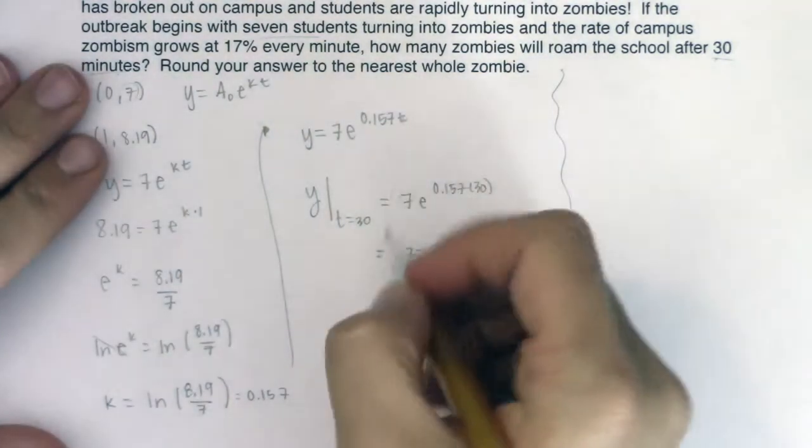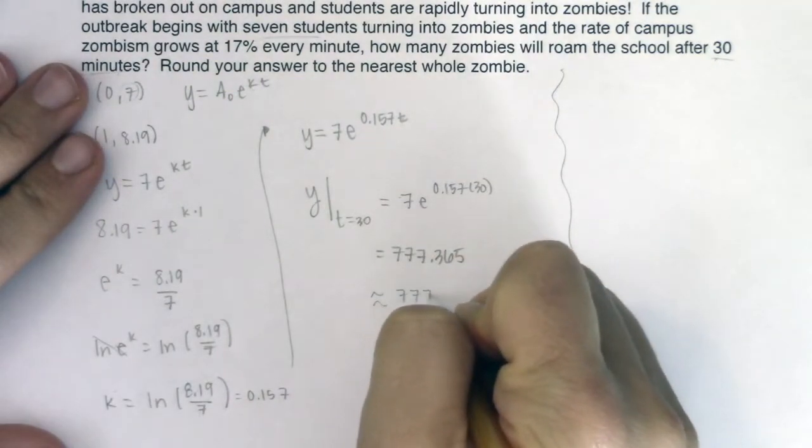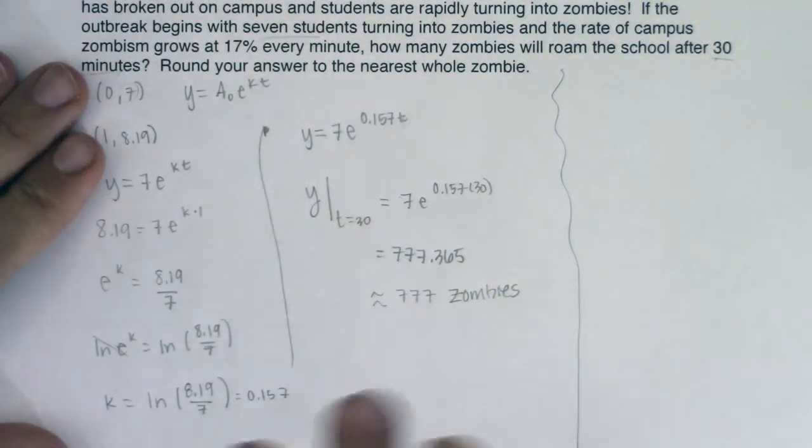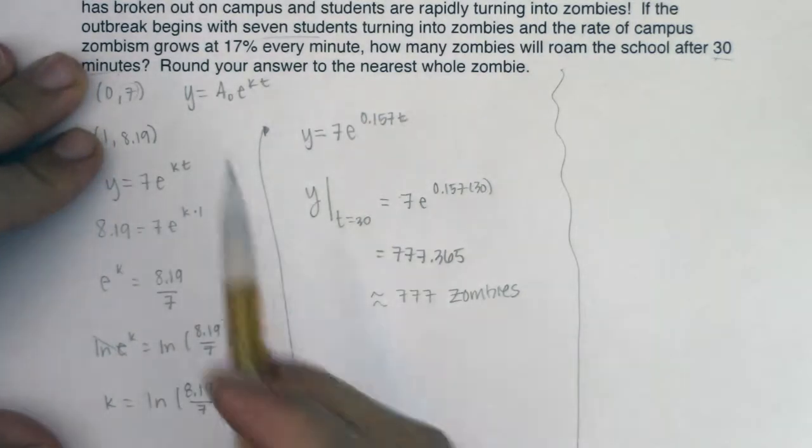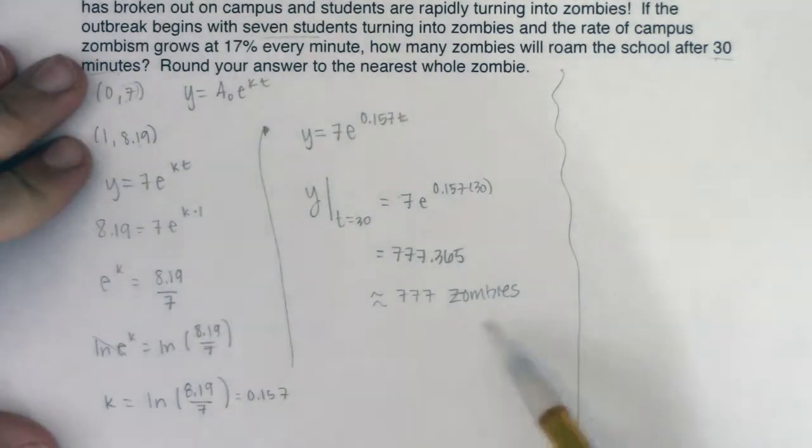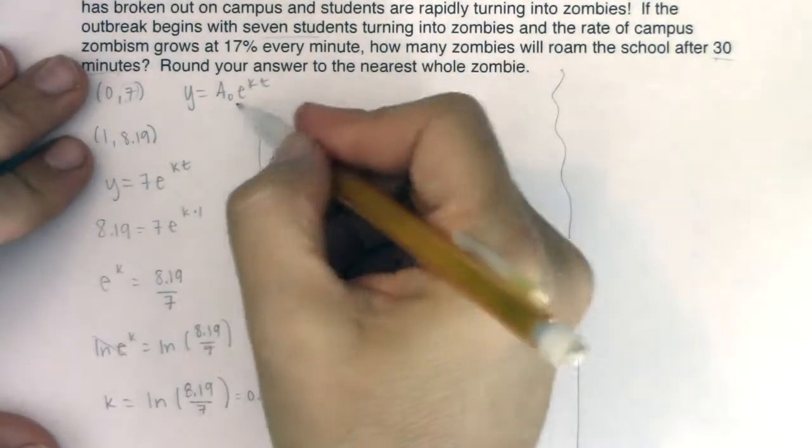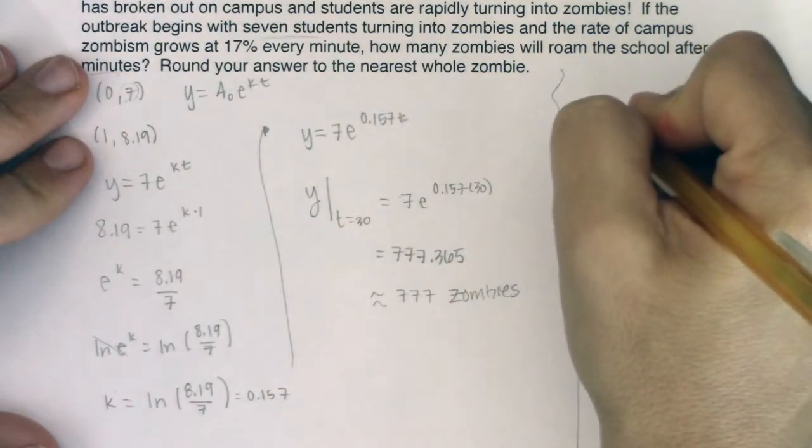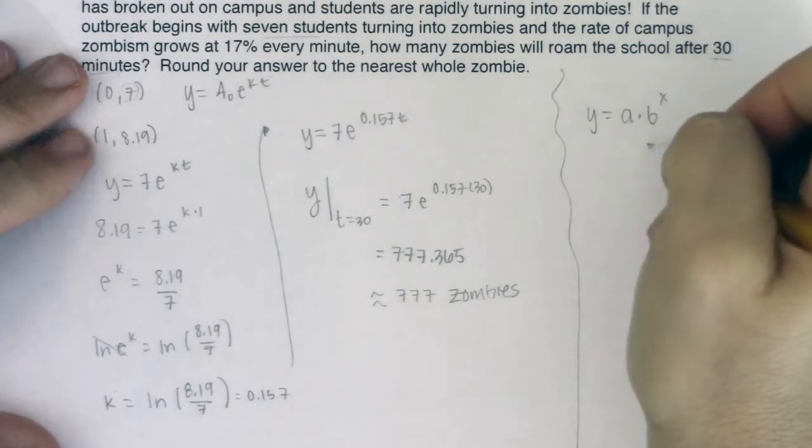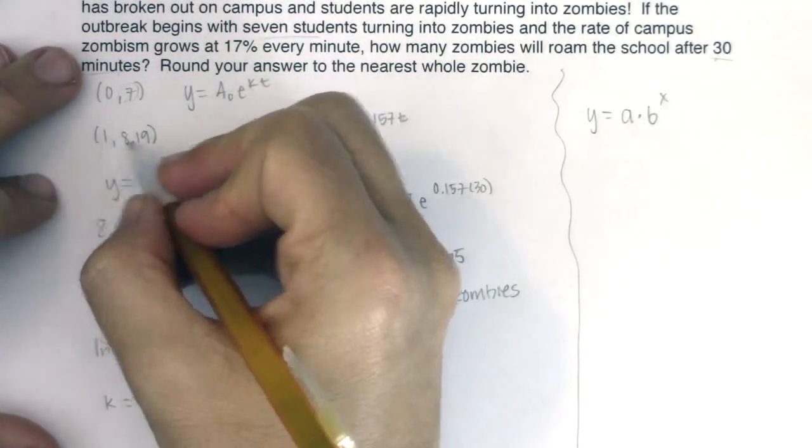How many zombies are we going to have roaming Chabot after 30 minutes? Gross, we're going to have 777.365. Now it says round your answer to the nearest whole zombie so if I want to round this this will be approximately 777 zombies. All right so there is my answer. If we have an outbreak at Chabot and seven people get infected initially and it's spreading at a rate of 17% every minute then after a half hour there will be 777 zombies floating around Chabot. So this was using the e to the kt formula. I want you to think about section 6.1 when we did a times b to the x.